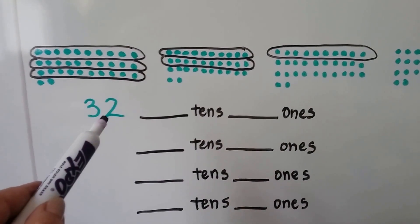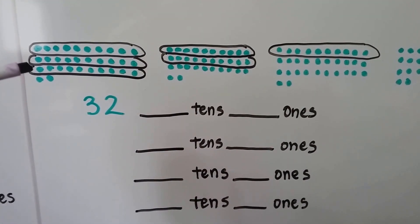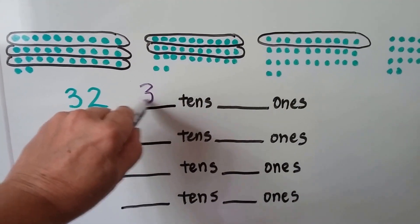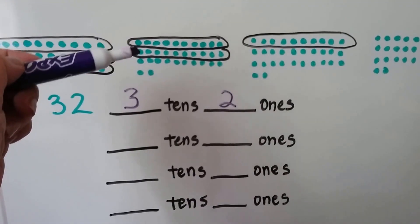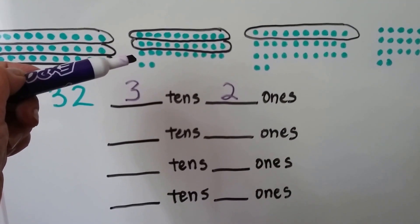Here we have 32. We can show it as one, two, three tens and two ones. We can show it as two tens and 12 ones.